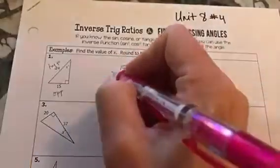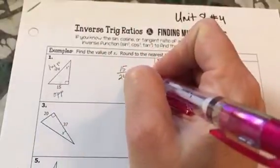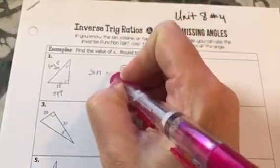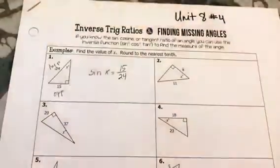And I know that opposite over hypotenuse, I'm going to use the sine. The angle I'm looking for is x. There, I've set up my equation.